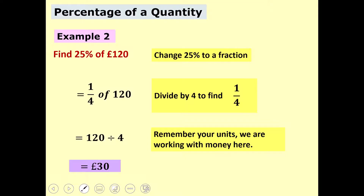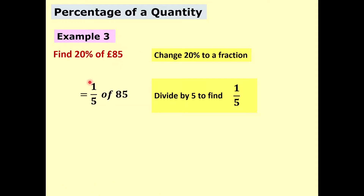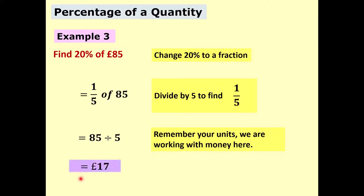Pause this video if you need to copy this down. Example 3: find 20% of £85. Same as the previous examples, we always start by converting the percentage to a fraction. 20% is a fifth, so we're going to find one fifth of 85, which means we divide by 5. We're not using a calculator, so draw out your division step if needed. 85 ÷ 5 = 17, and with the unit that's £17.